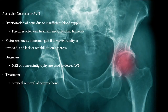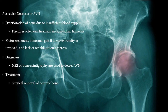Avascular necrosis is when the blood supply is cut off from a bone. This can occur in the femoral head and other areas and is tied to frequent corticosteroid use. It can also be idiopathic or due to a blood clot or fat embolism. Treatment is surgical debridement and repair.